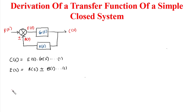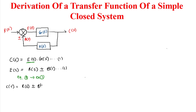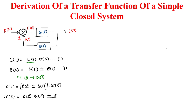Now we substitute Equation 2 into Equation 1. In place of E(s) we write R(s) ± B(s), so Equation 1 becomes C(s) = (R(s) ± B(s)) · G(s). Multiplying through by G(s) gives Equation 3: C(s) = R(s)·G(s) ± B(s)·G(s).